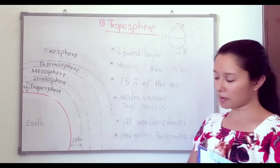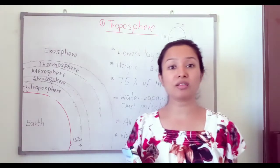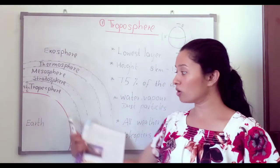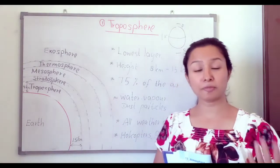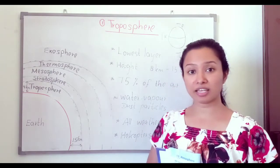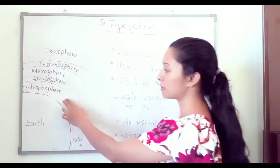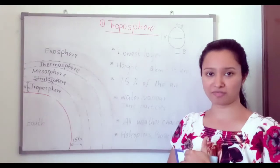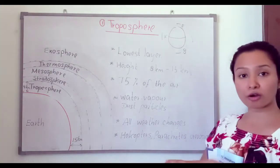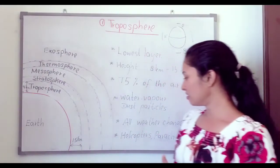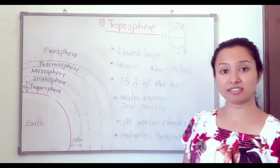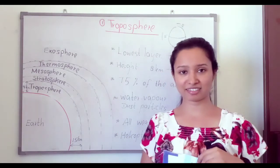We can see water vapor and dust particles in the troposphere. All weather changes take place in this layer — precipitation like rainfall, snowfall, and temperature changes all occur in the troposphere. We can also see helicopters, parachutes, and aeroplanes traveling through this layer.